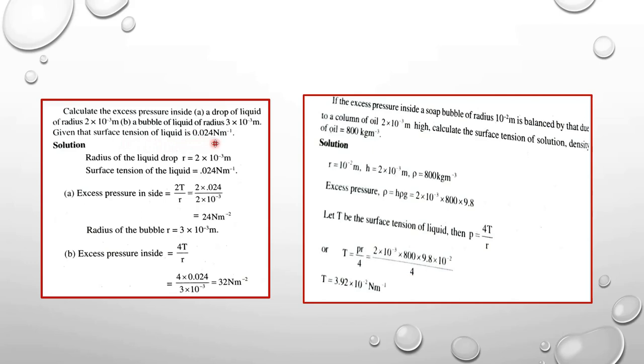The surface tension is 0.024 N/m. For a liquid drop of a given radius, we can calculate the excess pressure.